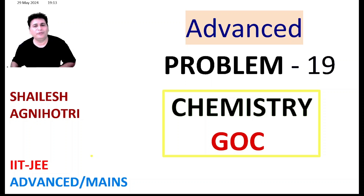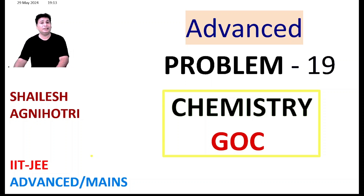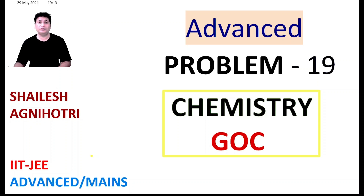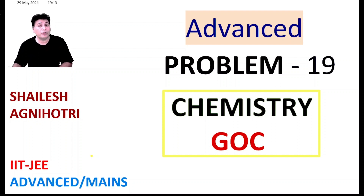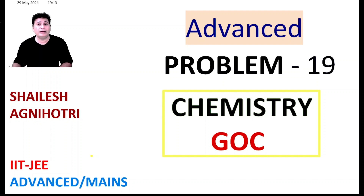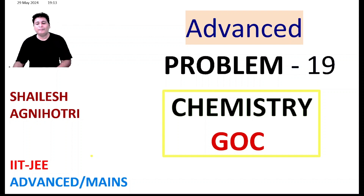Hello and welcome back to my channel. In this problem series we have already taken up 18 problems, covering very important topics of general organic chemistry like aromatic behavior, anti-aromaticity, carbocations, carbanions, acidity, basicity, and resonating structures. Now let us understand what is there for us in question number 19.